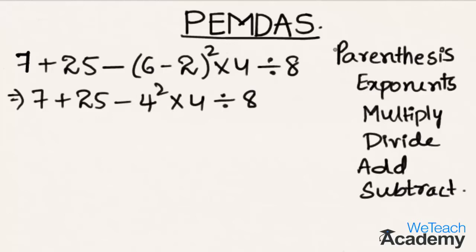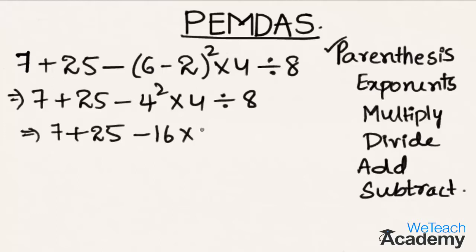Next we have to solve the exponent term. Solving and rewriting, we get 7 plus 25 minus 4 squared, that is 16, times 4 divided by 8. Solving the exponent term is finished.